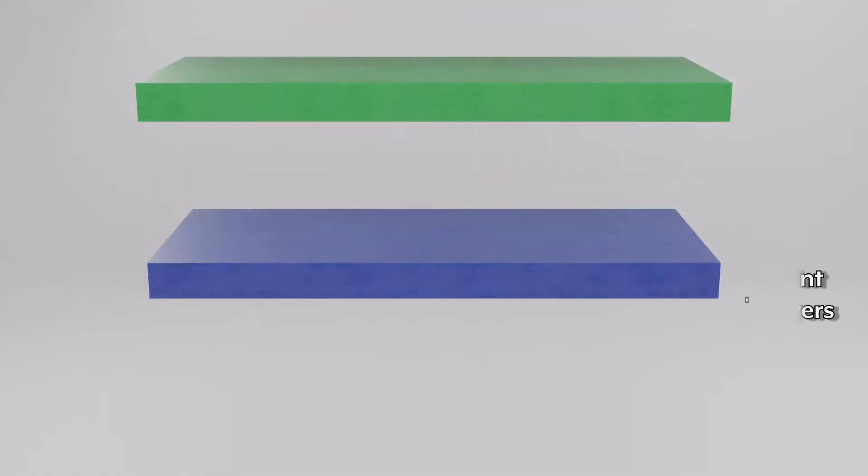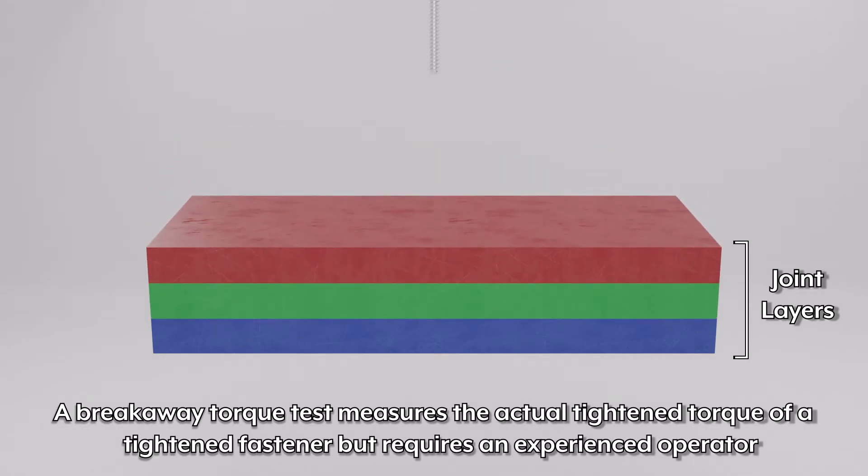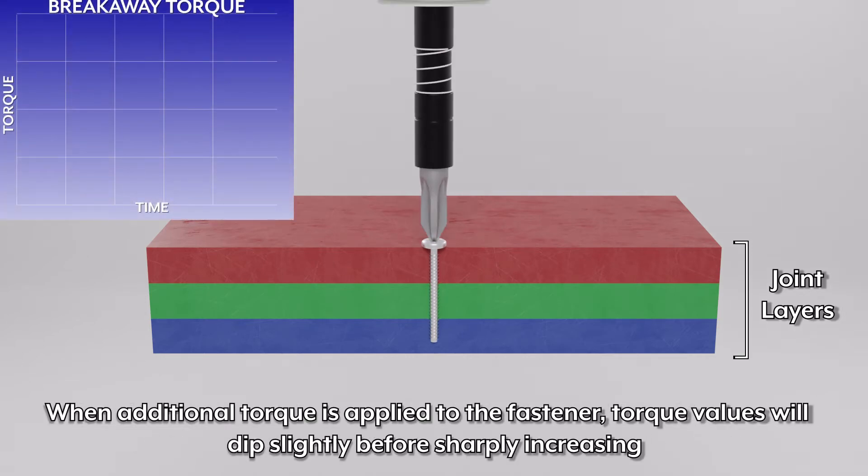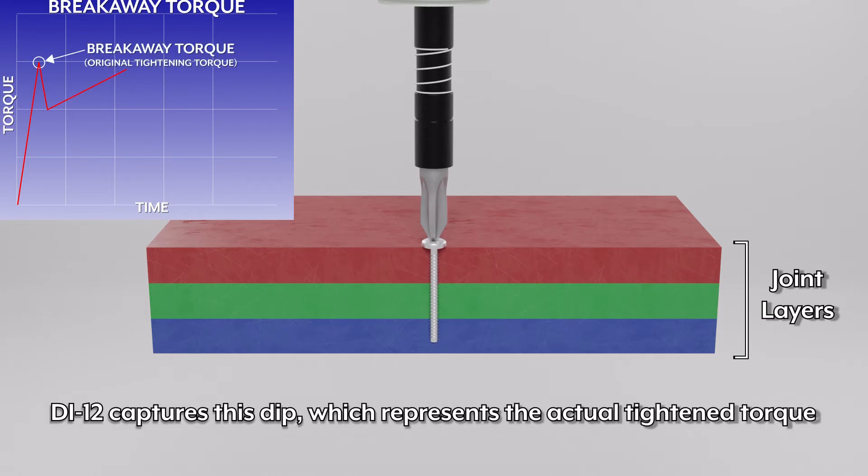A breakaway torque test measures the actual tightened torque of a tightened fastener but requires an experienced operator. When additional torque is applied to the fastener, torque values will dip slightly before sharply increasing. The DI-12 captures this dip which represents the actual tightened torque.